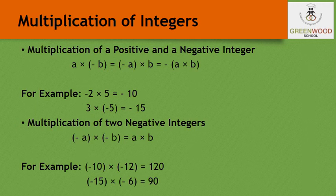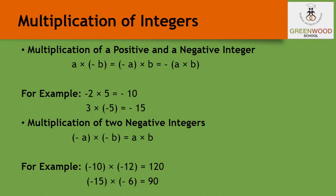Now let us study multiplication of integers. When multiplying a positive and a negative integer, the result is negative: a times minus b, or minus a times b, equals minus (a times b). Simply multiply both numbers and put a minus sign in front. For example, minus 2 times 5: multiply 2 and 5 to get 10, then put minus — answer is minus 10. Similarly, 3 times minus 5 gives minus 15.